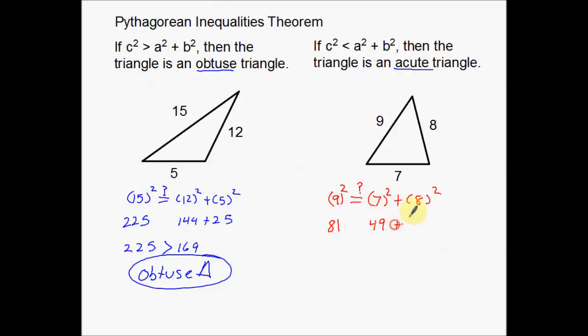7 squared is 49. 8 squared is 64. Add those together, you get 113. This is 81 still over here, which means 113 way bigger than 81 over there.